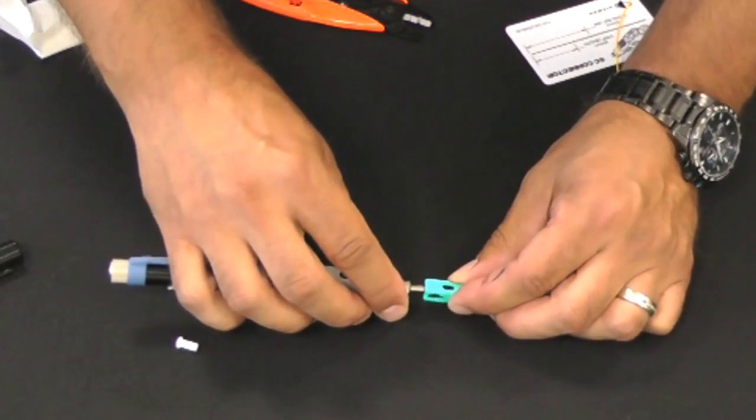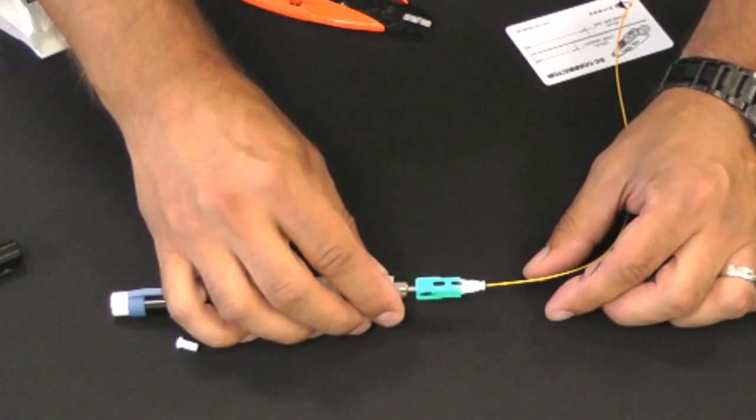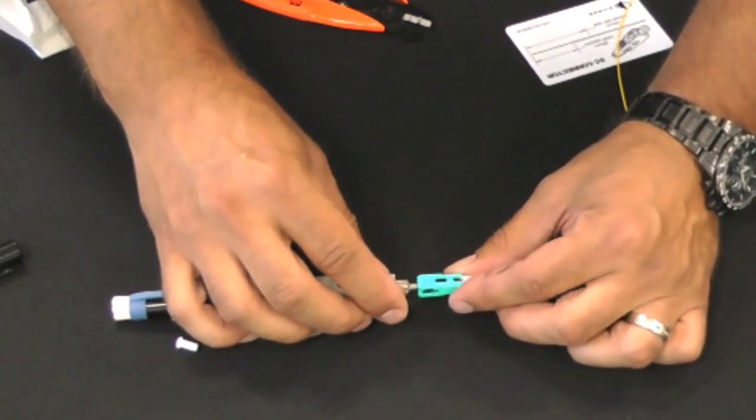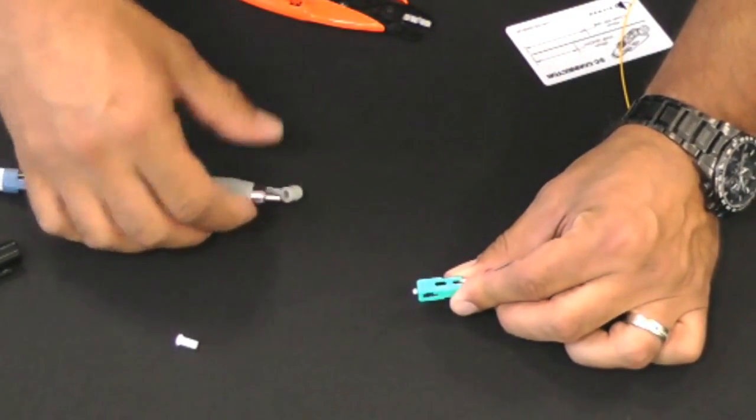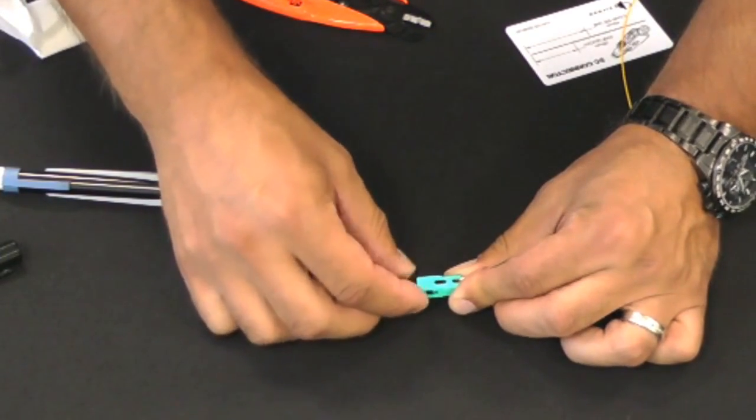After turning the VFL on, observe the VFL window located closest to the end face of the connector for a bright red glowing light. If no light or a very faint glow is detected, the termination is good and the dust cap can be put back into place.